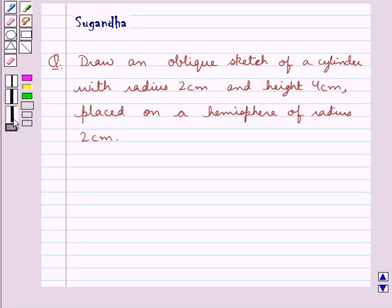Hello and welcome to the session. In this session we discuss the following question which says, draw an oblique sketch of a cylinder with radius 2 cm and height 4 cm placed on a hemisphere of radius 2 cm.